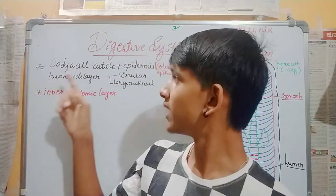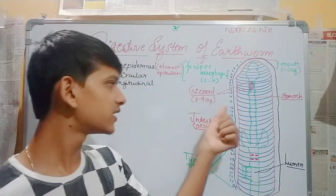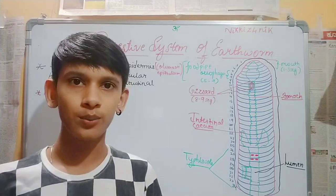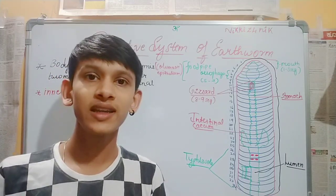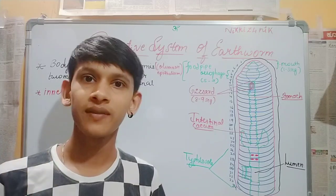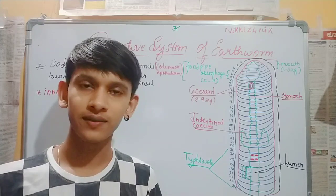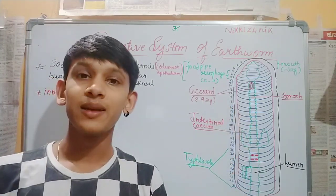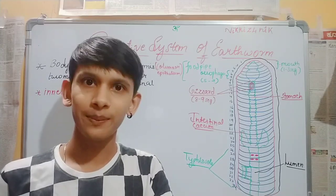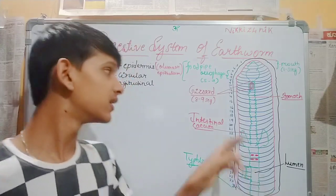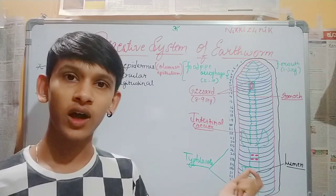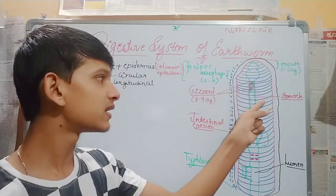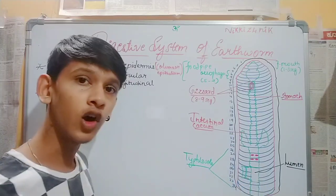The body wall of earthworm has multiple layers. First is cuticle, a non-cellular membrane that prevents water loss and enables cutaneous respiration. Next in red color layer is epidermis, the outer layer. Inside there are epithelium cells. In earthworm, there is coelomic epithelium creating a cavity.